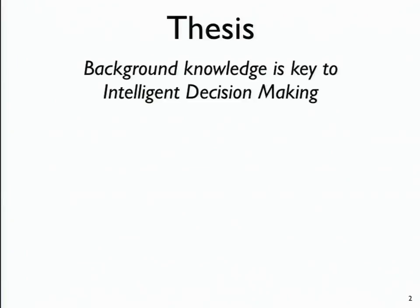Increasingly, we're asking machines to take higher-level intelligent decisions on our behalf — which stock to invest in next, or which article to read next. But traditionally, machines don't have access to the background world knowledge that you and I have. Our goal is that to make these decisions more effective, we need access to broad-coverage world knowledge — available to machines at the right granularity, right relevance, and right point in time.